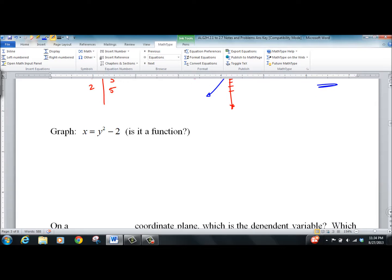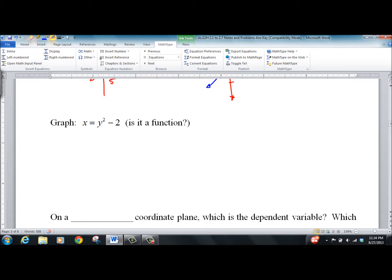Now, here's another one. We could just plug values in for y. See what we get out. 1 minus 2 is negative 1. Put in 0, we get negative 2. Put in 1, we get negative 1. Put in 2, we get 2. And then we can graph this.